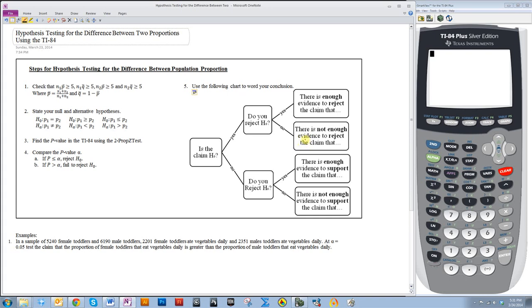In this video, I'm going to cover hypothesis testing for the difference between two proportions using the TI-84. There are five steps that need to be completed. The first thing you need to do is make sure that the samples are large enough so that it can be a normal sampling distribution. You can do that by finding p-bar and then multiplying each of the sample sizes by p-bar and q-bar.